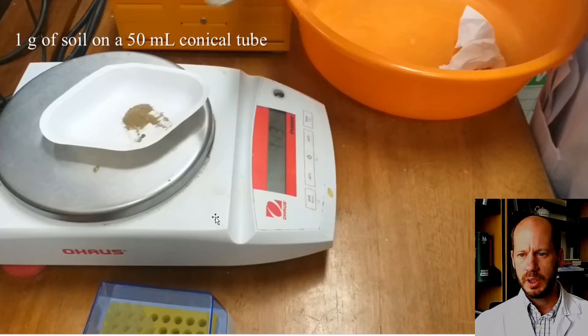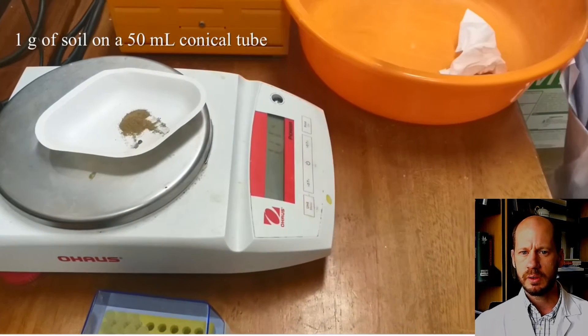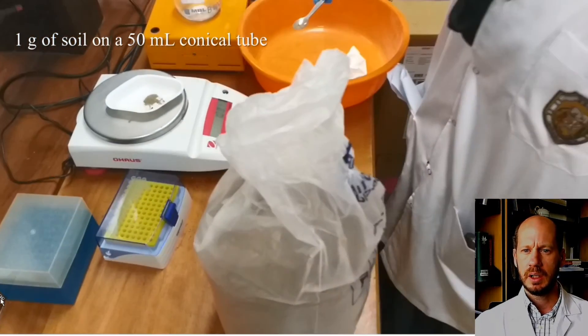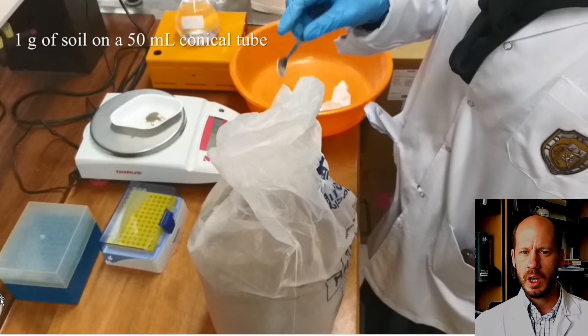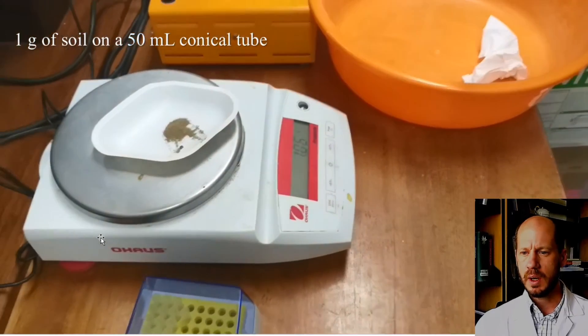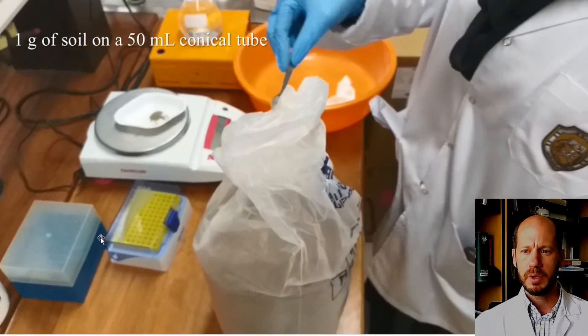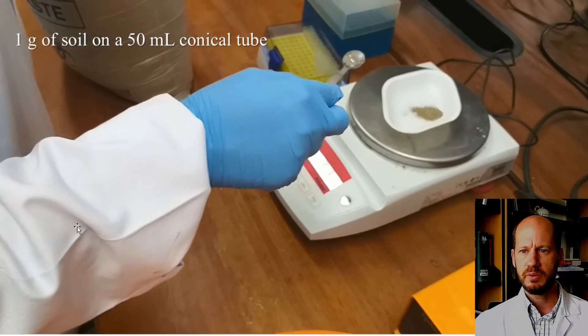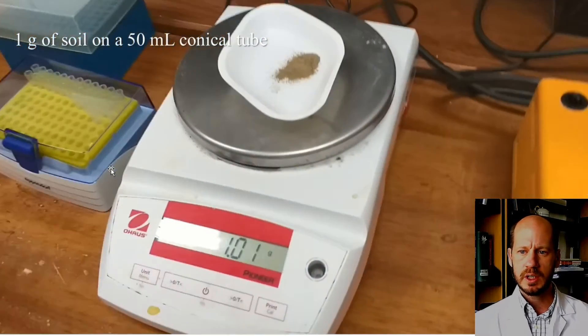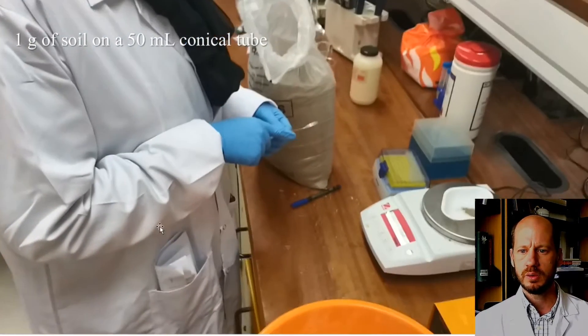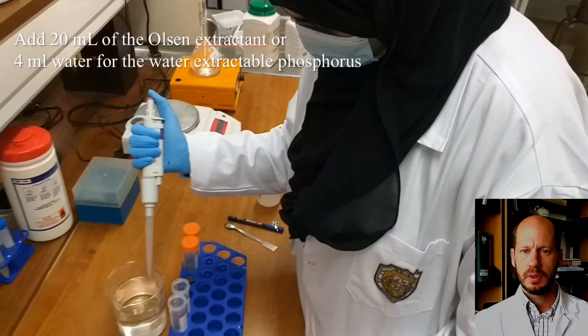Then we need to weigh the soils. We have two soils here in this situation: soil one and soil two. We weigh one gram twice. One gram will be for Olsen extract, and the second one will be for water extract. So it's measuring here one gram of soil, and then this one gram of soil is transferred to a 50 ml conical tube, a falcon tube.